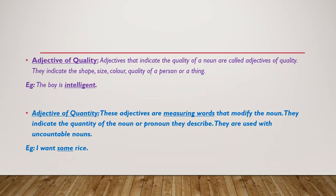Adjective of quality: adjectives that indicate the quality of a noun are called adjectives of quality. They may indicate the shape, size, color, quality, taste, height, length, width, etc. of a person or a thing. For example: the boy is intelligent.